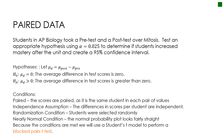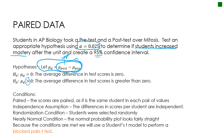Let's work through this question together using an alpha level of 0.025 and a 95% confidence interval. For my hypotheses, let the mean of differences equal post minus pre. So I'm assuming the mean of differences is zero — the average difference in test scores is zero. The question asks us to determine if students increased mastery after the unit. Since I'm taking post minus pre, I'm expecting post to be larger, so I would assume differences are greater than zero because I'm assuming test scores increased.